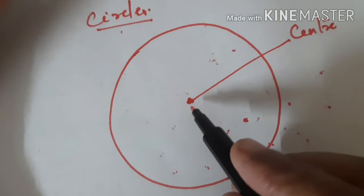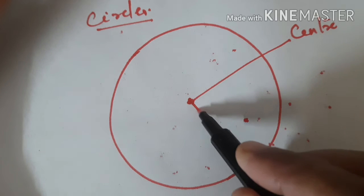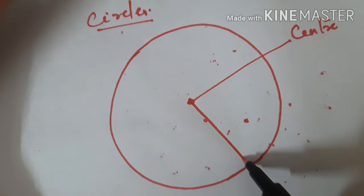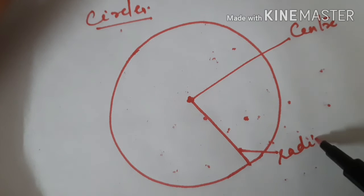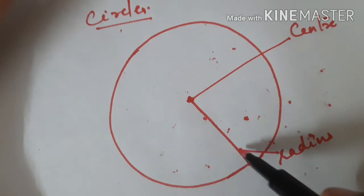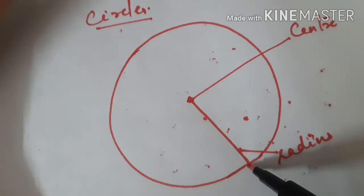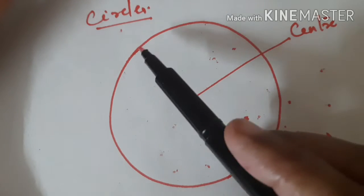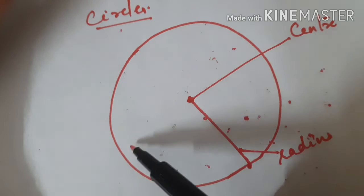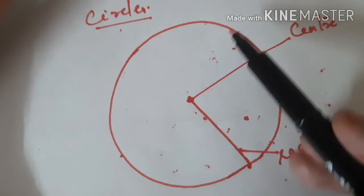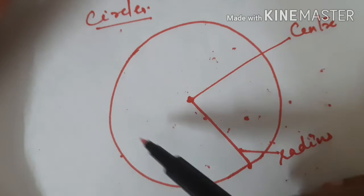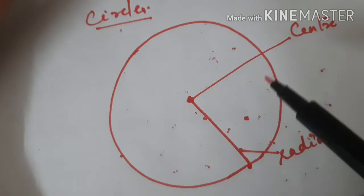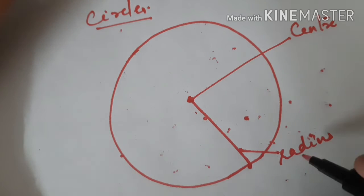From the center to the circle, that line is known as the radius. You can draw many radii from the center to different points on the circle, but all radii of the same circle will be of the same length.